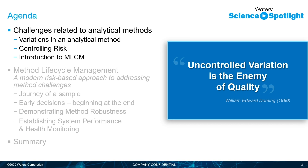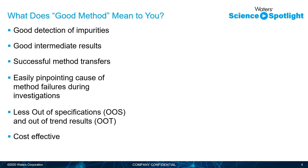I'd like to start by bringing us all on the same page and have a look at sources of variation, risk, and a brief introduction to MLCM. When you sit back and think about what 'good' means for you — this non-quantifiable term — it means different things for different people. Generally speaking, you want good detection of impurities, good intermediate results, successful method transfers, the ability to easily pinpoint causes of method failures, no out-of-specification or out-of-trend results, and a cost-effective method.